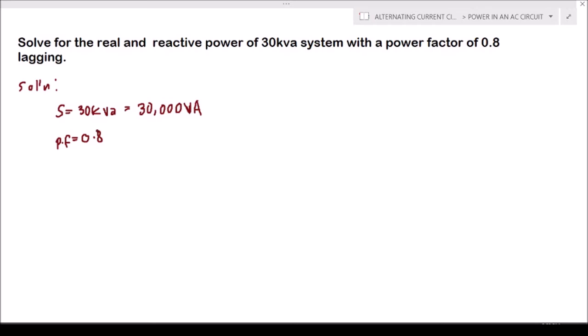Okay, so now solve for our real power. Going back to the formula of power factor: power factor is equal to the real power over the apparent power. We could solve for the real power by basic algebraic manipulation, so we have power factor times the apparent power. We could substitute the given, so we have 0.8 times the apparent power, which is equal to 30,000 volt ampere.